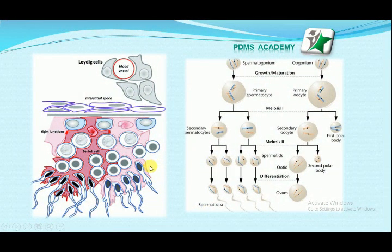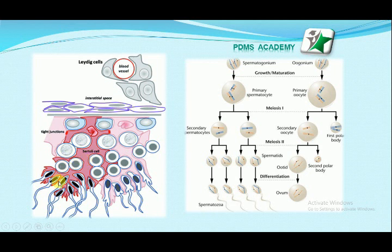Here you can see a pictorial example. These cells are called Leydig cells, also known as interstitial cells. They are present in the interstitial space between seminiferous tubules. Sertoli cells are also present between the seminiferous tubules and are helpful for the production of spermatozoa. In spermatogenesis, spermatogonia produce primary spermatocytes, which are then converted into secondary spermatocytes, and secondary spermatocytes are converted into spermatids.